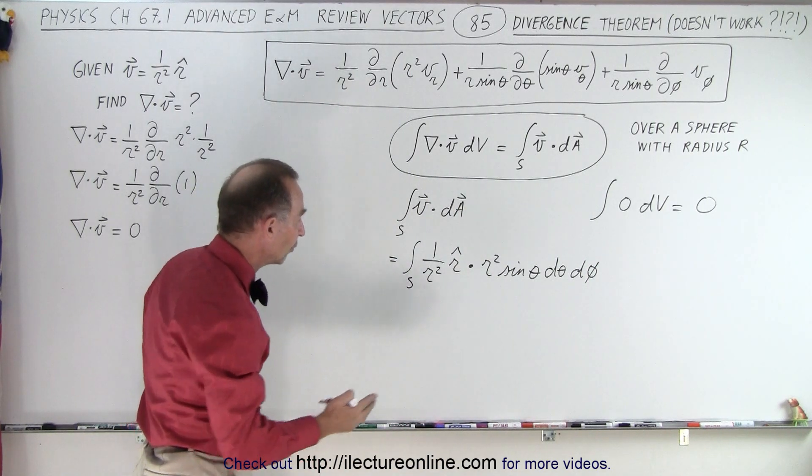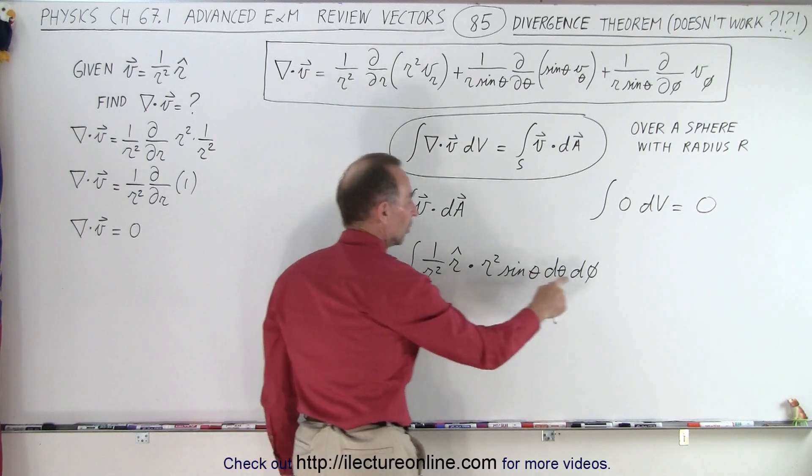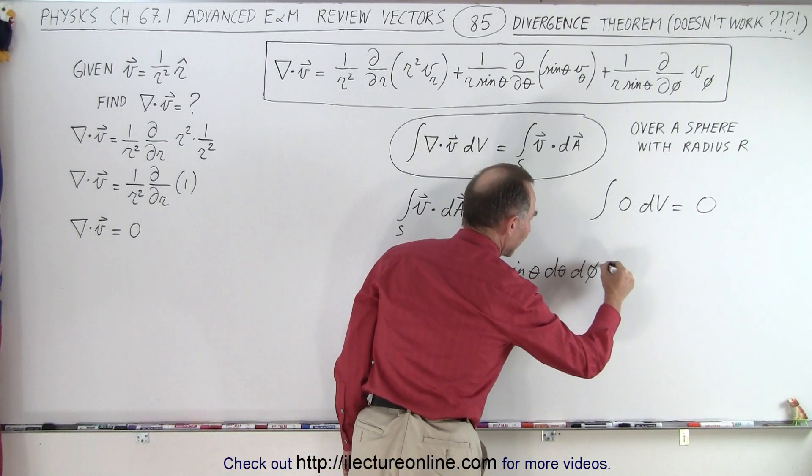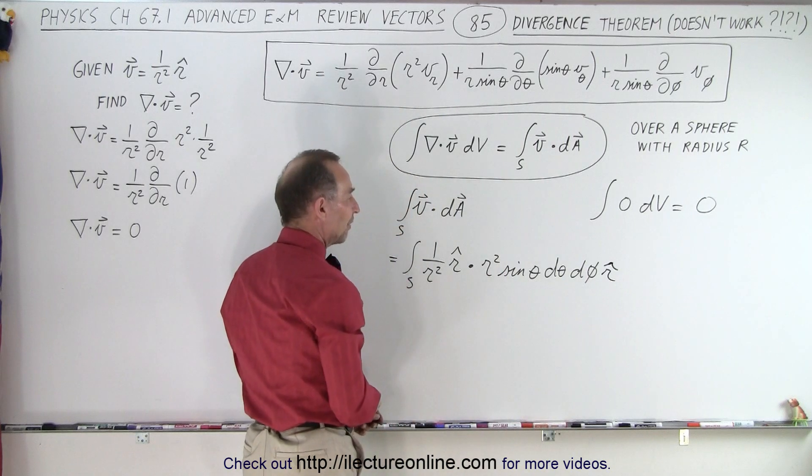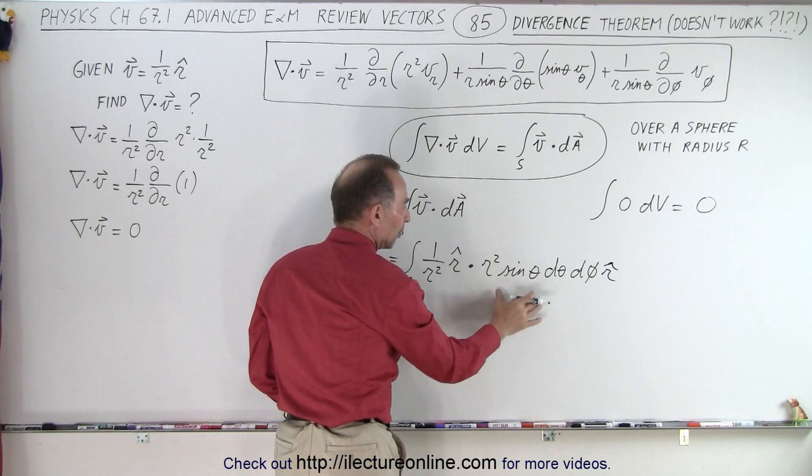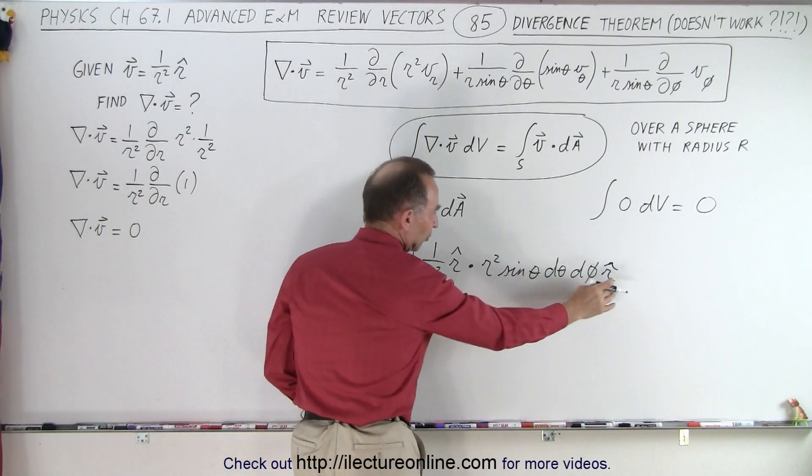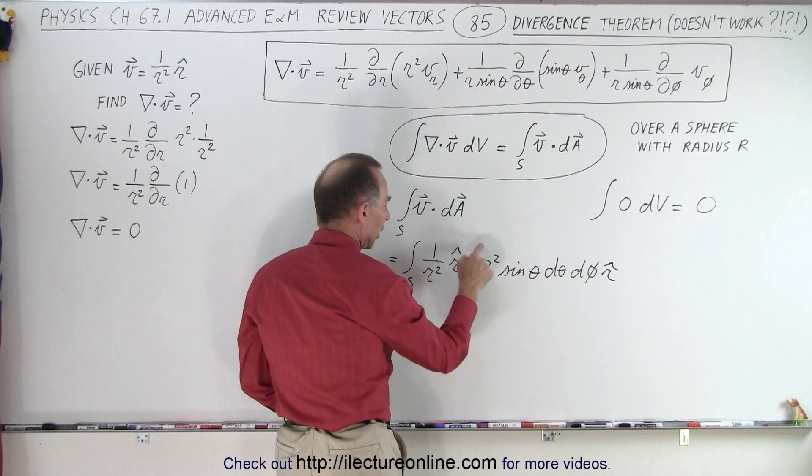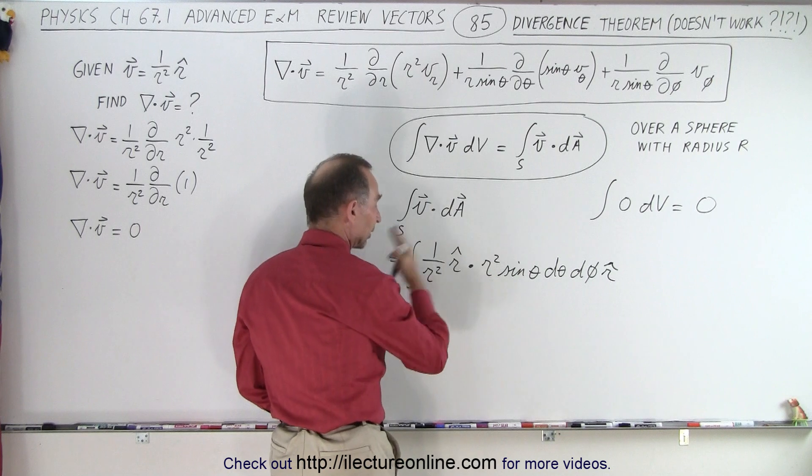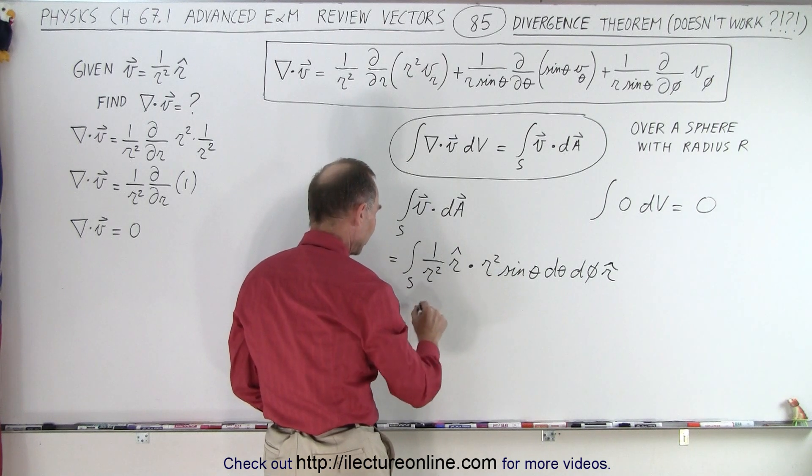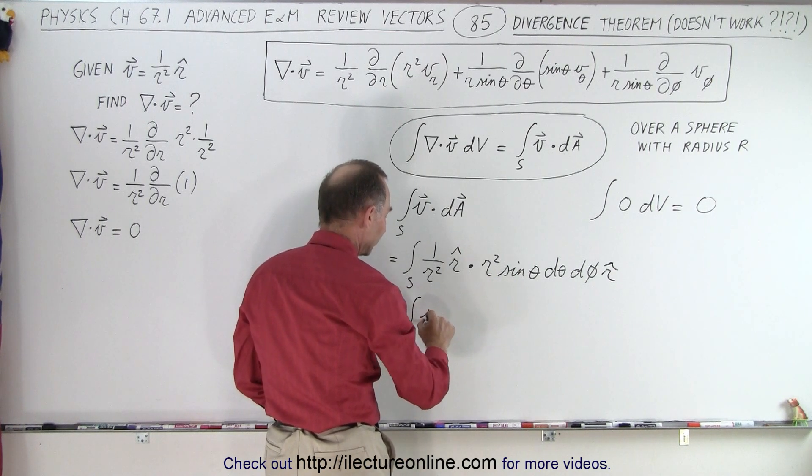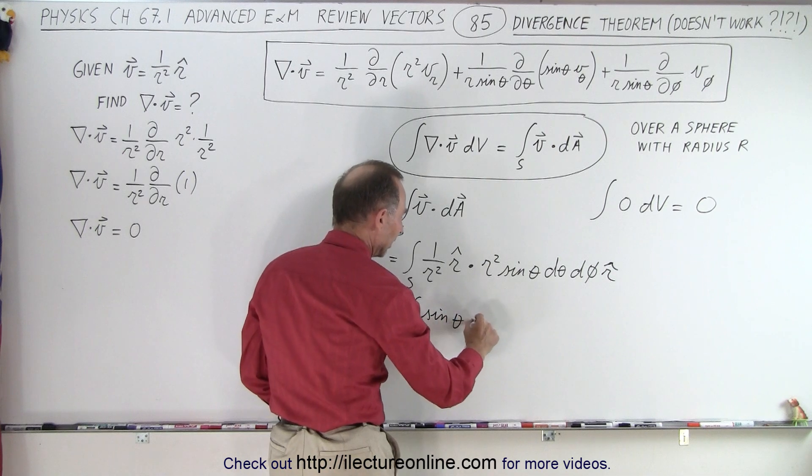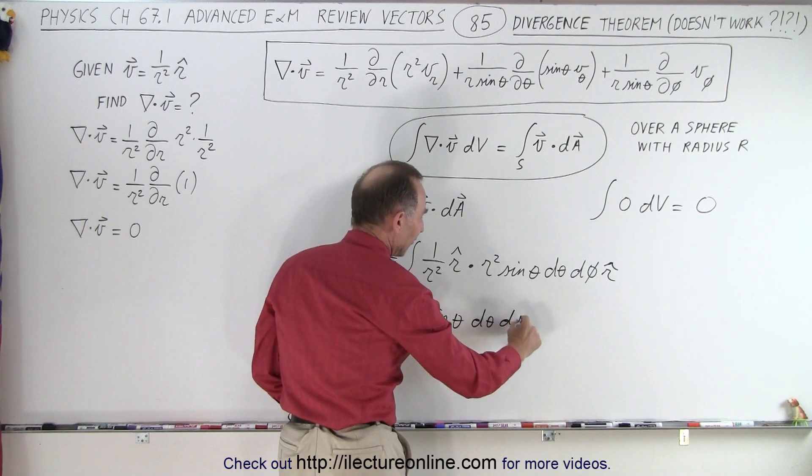R dot—oh, again I keep forgetting my r unit vector because the area element is pointing in the radial direction. When we take dot product, that becomes equal to 1. R squared divided by r squared is equal to 1. That comes outside the integral sign. So this becomes equal to the surface integral of the sine of theta d theta d phi.